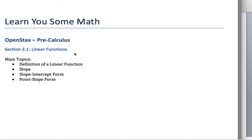A quick note from section 2.1 before I get to the summaries. I think it makes more sense to talk about what your book calls 2.1 and 2.2 all at once. In 2.1, your book talks about linear functions, and in 2.2, your book talks about the graphs of linear functions. They go hand in hand, and I think one really helps make the other make more sense. So these videos will cover sections 2.1 and 2.2.